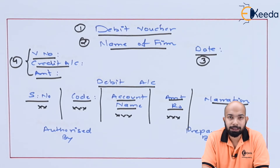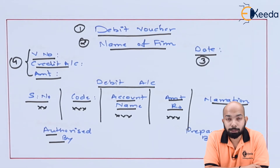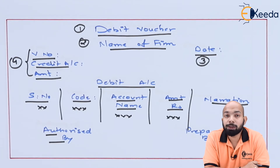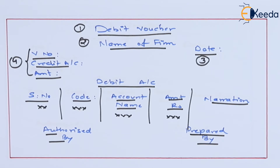That is the debit voucher format. After these columns, two more details are added: authorized by — the specific person who signs and validates the voucher — and prepared by — the cashier or voucher specialist who prepared it. The signature of the authorizer means the voucher has been validated with no errors, and it has been authorized.